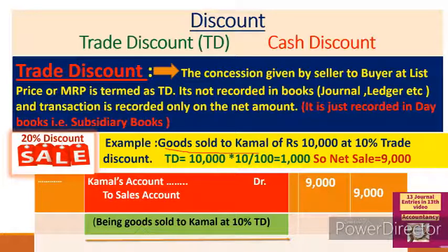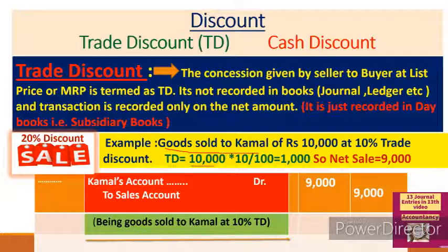See this example: goods sold to Kamal of rupees 10,000 at 10% trade discount. So at plus one level, we calculate: 10,000 multiplied by 10% = 1,000 trade discount. Net sale — we do not show the MRP or list price; after minus-ing the trade discount, the amount that comes is what we directly record in the journal entry.